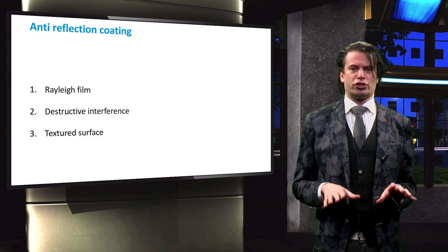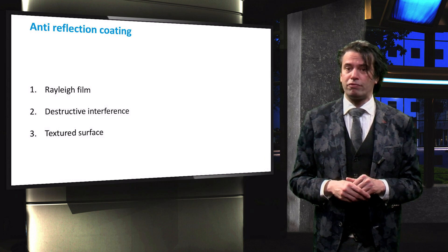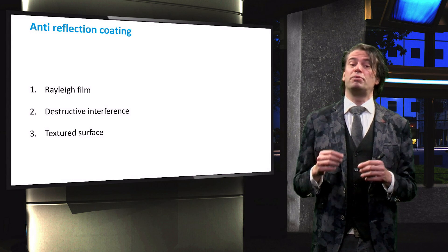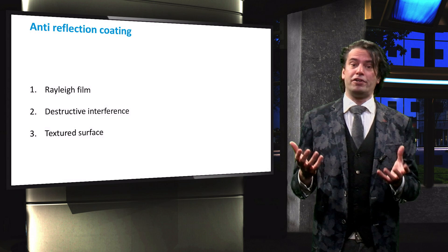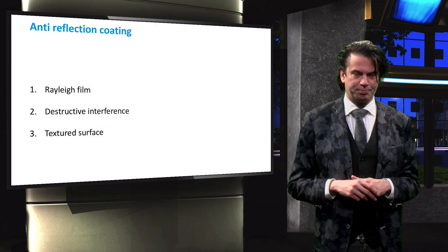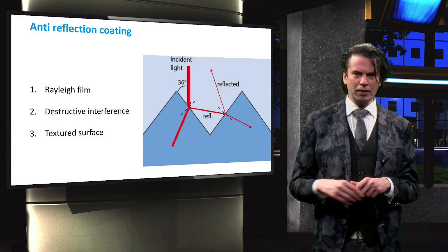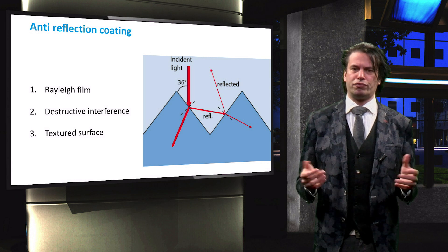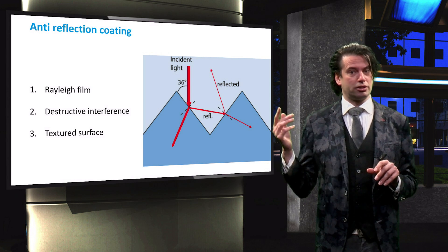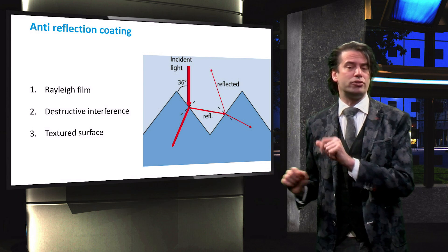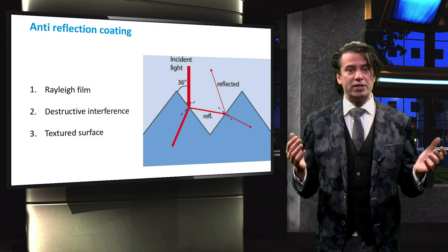Light scattering in solar cells has two basic functions. The first is to minimize reflection at the front of the solar cell. We have discussed two approaches already: first, an anti-reflection film can be introduced with a refractive index between that of air and the silicon wafer; and second, the concept of destructive interference can be used to minimize reflected light intensity. The third approach is the use of a textured surface. A light beam perpendicular to the textured surface is reflected from one part to a second, where another fraction is transmitted into the layer. Effectively, less light is reflected compared to a flat interface.